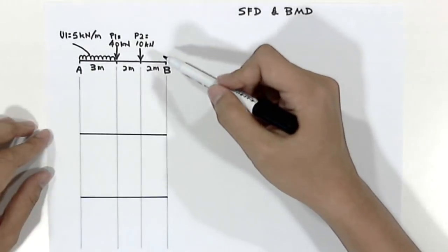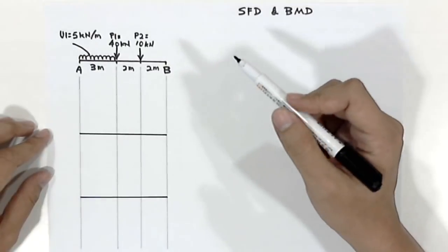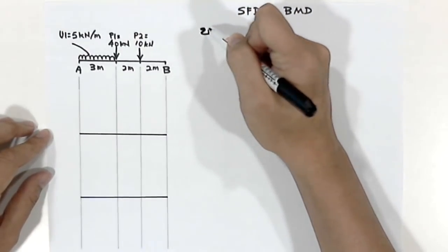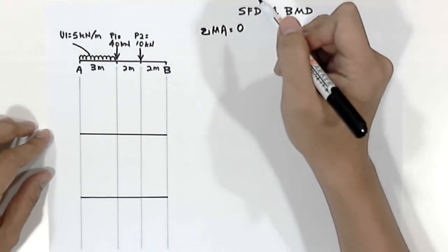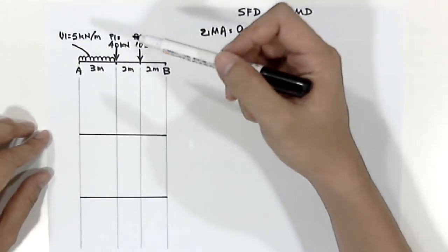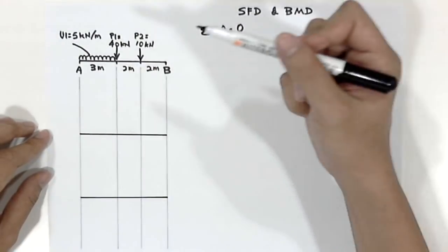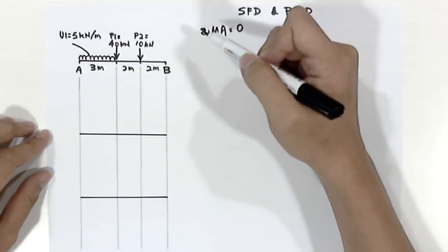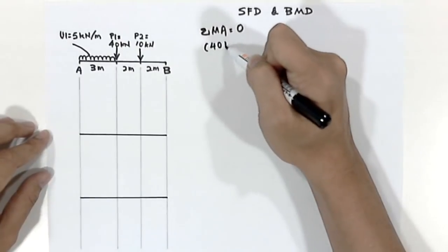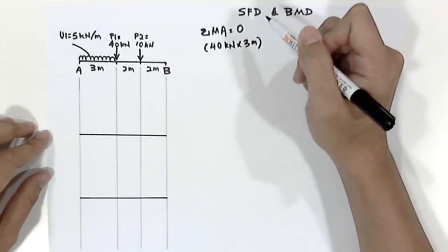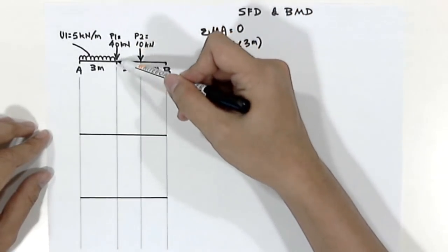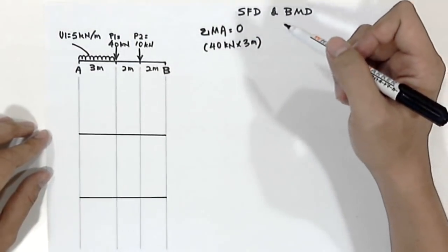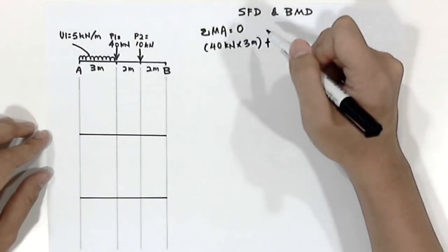The position of the loads is as displayed in the diagram. By following the equilibrium formula, we know that sigma MA equals 0. We'll go into calculating all the moments acting on point A. The first moment will be coming from P1, which is 40 kN times 3 meters. We have to calculate from the load times the distance from point A, because we are using point A as our point of reference. The next thing will be P2.